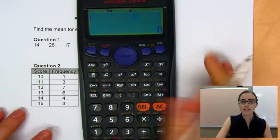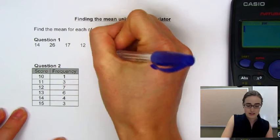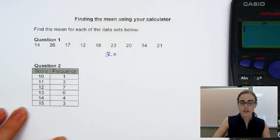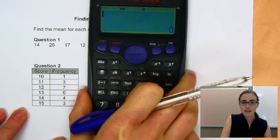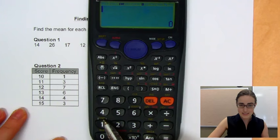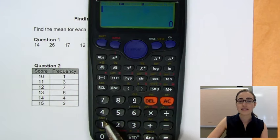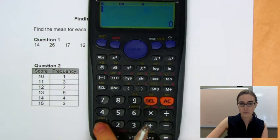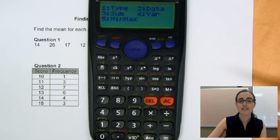Now to find the mean, the symbol for the mean is an X with a bar above it. So we call it X bar. So that's what we're looking for on our calculators. So in here we're actually going to press this stat button here above the 1 key. It says stat in yellow. We're going to press shift and then that 1 button. And that'll give us all our statistics options.